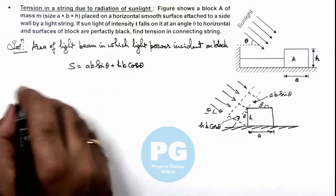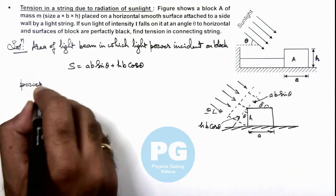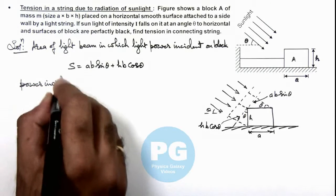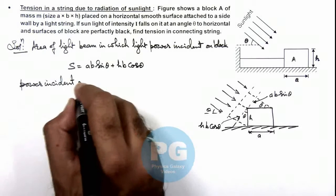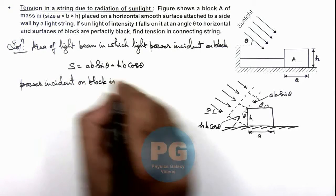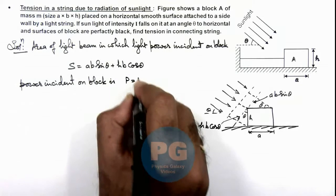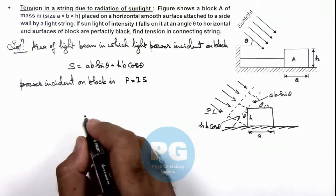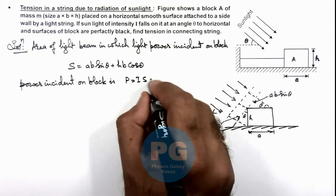Now we can calculate directly the power incident on block. We know power we can write as intensity multiplied by the cross-sectional area.